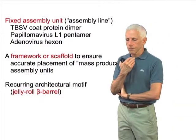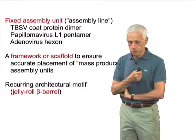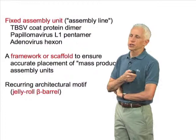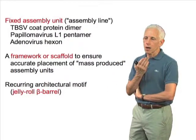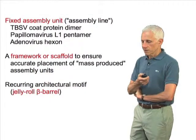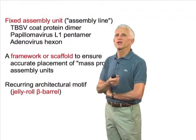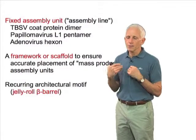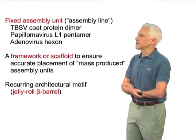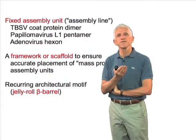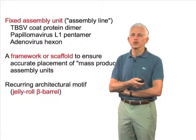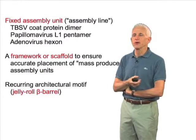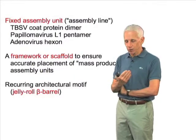In all of these structures — the papillomaviruses, the adenoviruses, the picornaviruses, the plant viruses such as tomato bushy stunt virus — we see a simple construction principle at work, like a factory assembly line. There is, in all cases, a fixed assembly unit. It happens to be a dimer in the case of the coat protein of TBSV. You saw that it was a pentamer in the case of the L1 protein of the papillomaviruses, the same is true of the polyomaviruses like SV40, and the trimeric adenovirus hexon is likewise a mass-produced assembly unit.